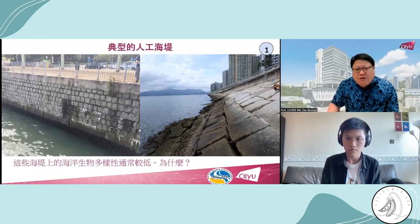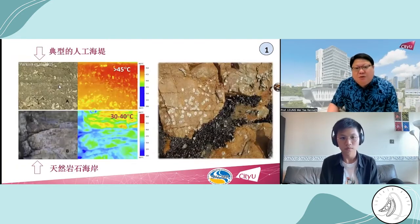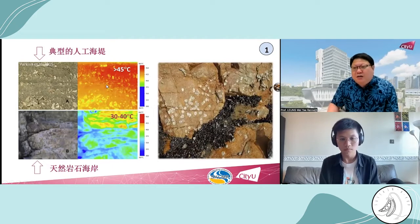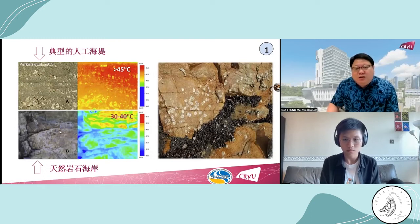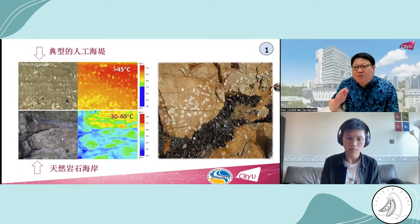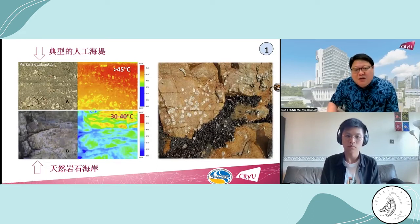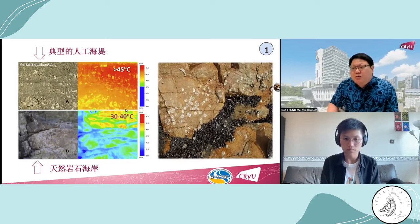As I said before, you can't find much life on it due to the heat stress. This is a typical seawall — at low tide in midday in summer, the temperature on the seawall can climb up over 45 degrees Celsius, sometimes even up to 60 degrees Celsius. On the contrary, if you go to a nearby rocky shore and do thermal imaging, because of indentations, water-holding features, and different facets facing different sides of the sun, the temperature can be lowered by 15 degrees Celsius compared to the vertical seawall.